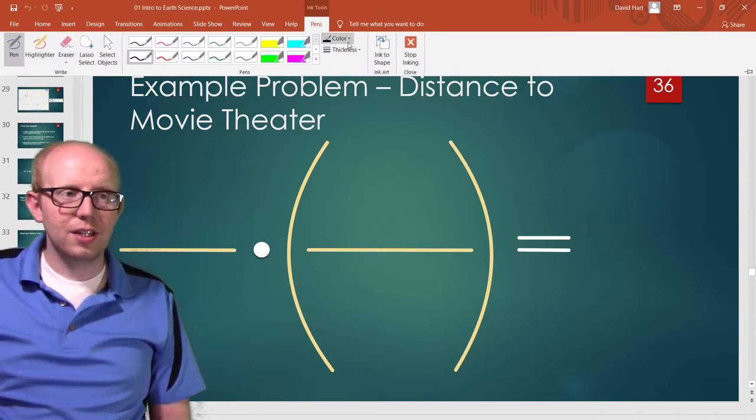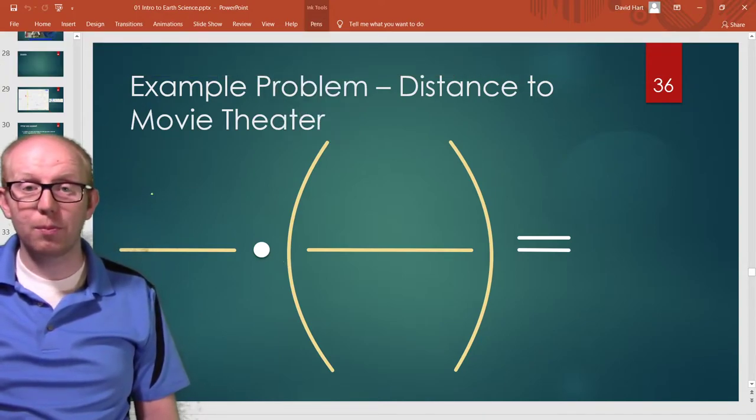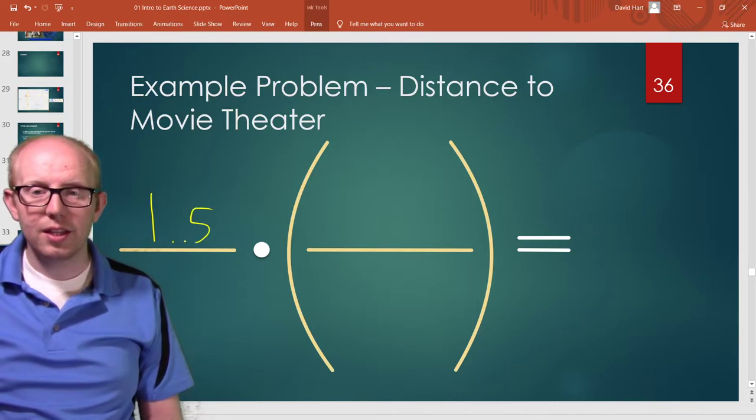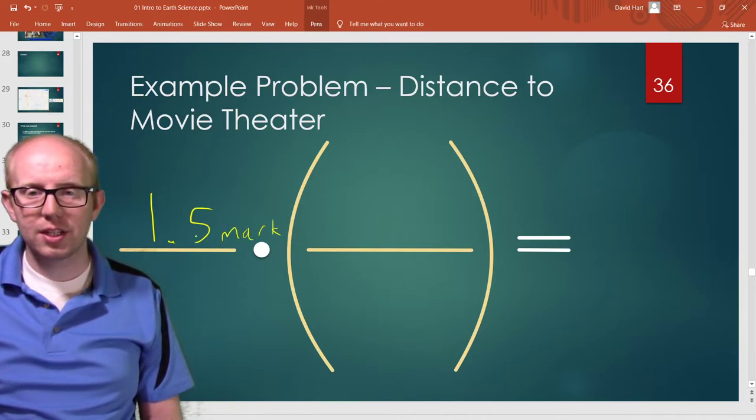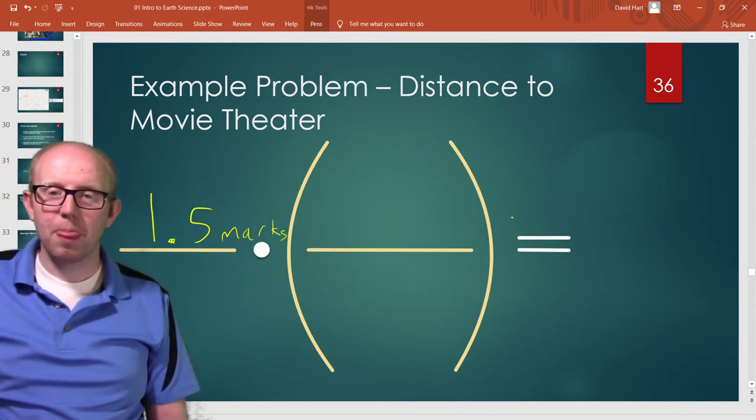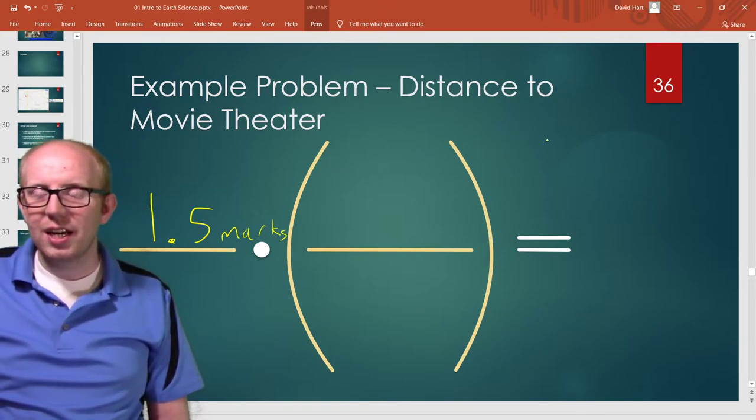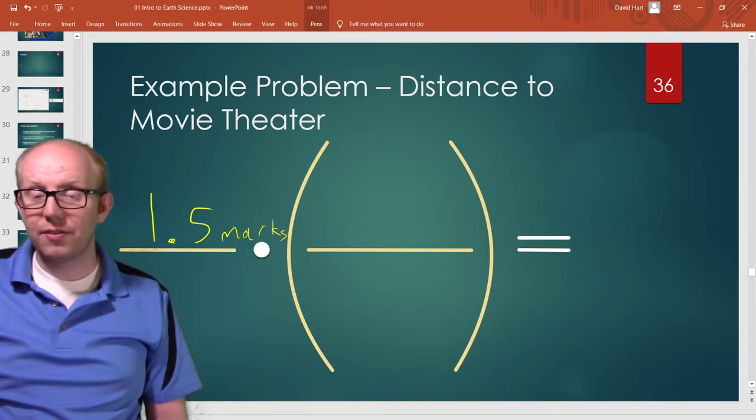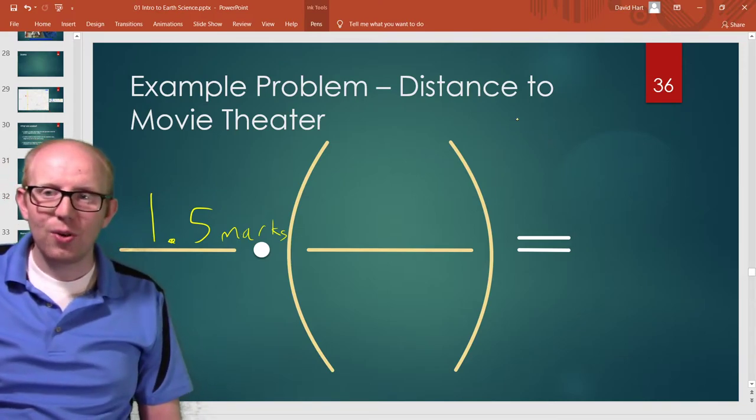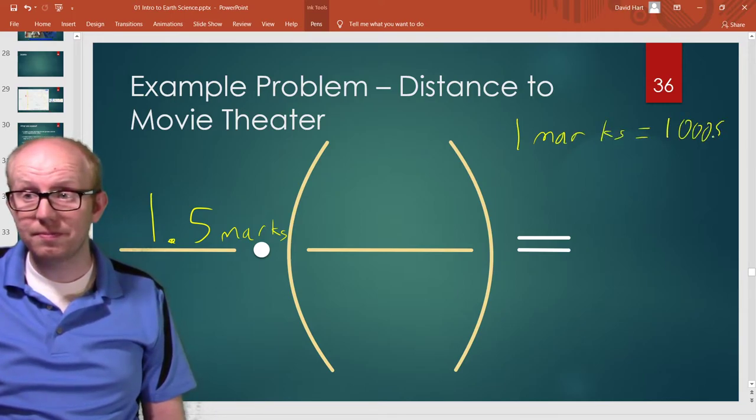This is how you set it up. I kind of draw this little diagram right here to help us set up the math. We're going to put the thing that we know in the top, so we have about one and a half of those markings between the movie theater and the building. We also need to know our scale - one of those markings was equal to a thousand feet.